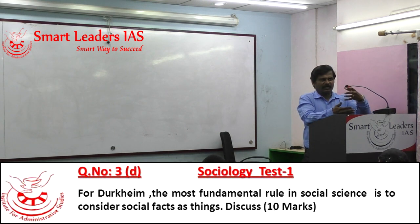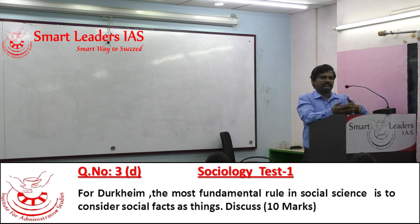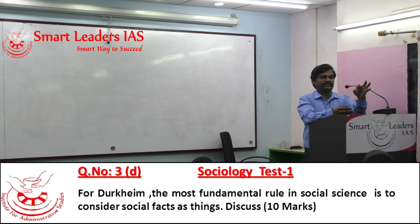On one hand, by doing so he created sociology as an independent discipline, but at the same time he was rejected subsequently in the 20th century by non-positivists. Weber questioned the role of observation in social science research forwarded by Emile Durkheim when he said 'treat social facts as things.'